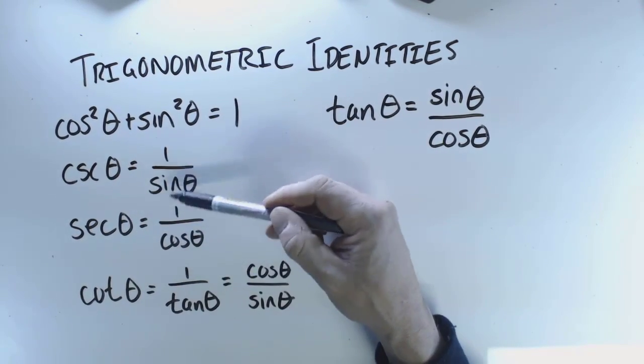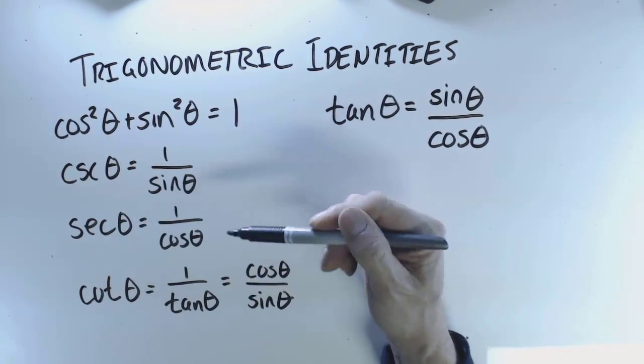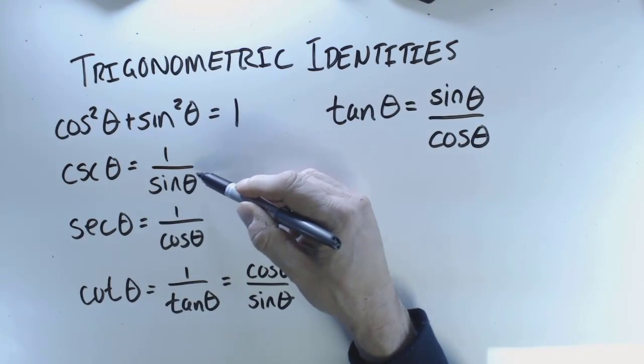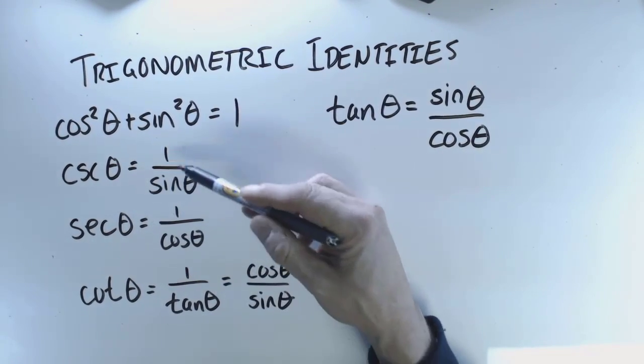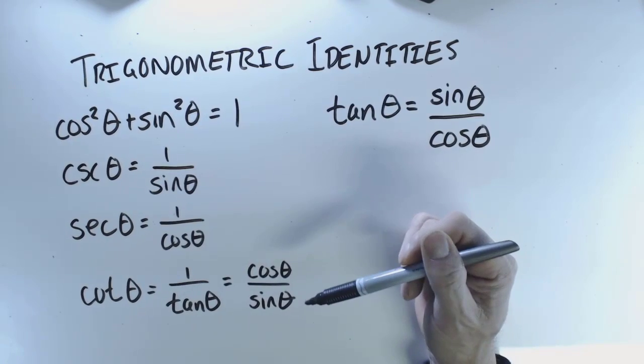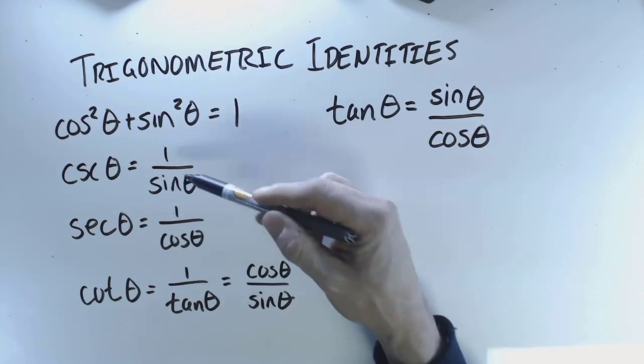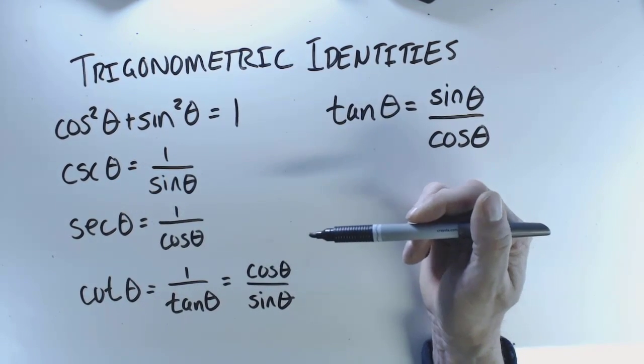These are just definitions of the reciprocal trigonometric functions, and you will notice there are some restrictions because sometimes sine theta and cos theta are equal to zero, and so occasionally these are not true.